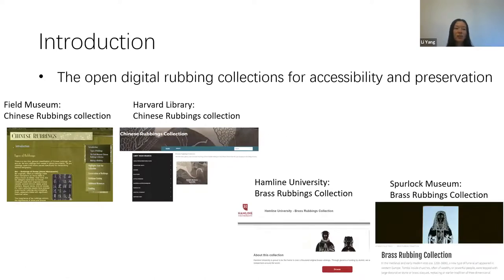Digitization has become mainstream for ancient objects in libraries and museums. Digitizing rubbings allows them to be more open to the public, reaching a wider range of patrons, facilitating research in relevant fields, and enabling long-term preservation — especially for rare, molded, deteriorated, or inaccessible rubbings. Many libraries and museums have digital open rubbings collections, including the Chinese rubbings collections of the Field Museum and Harvard Library, and the brass rubbings collections of Hamline University and the Spurlock Museum, each exhibiting rubbings with different structures and levels of detail.